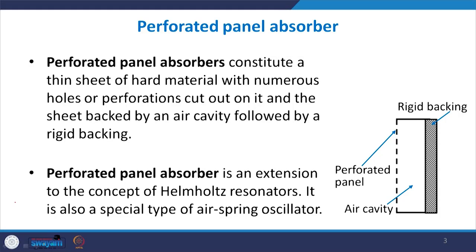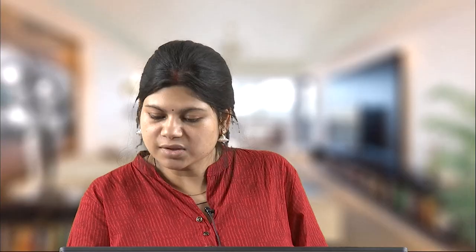We will study about its working and its principle. A perforated panel absorber consists of a thin panel backed by a rigid cavity. It is similar to a fixed acoustic panel with a concealed cavity, with the only difference being that the panel is not solid but has holes throughout — it is a perforated panel. This is the typical construction.